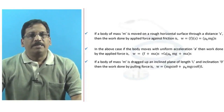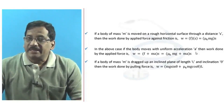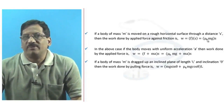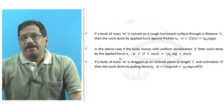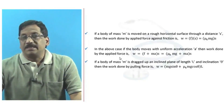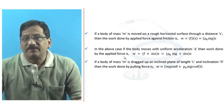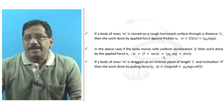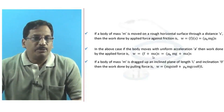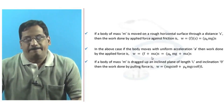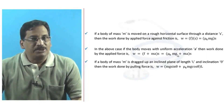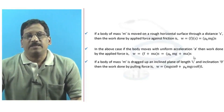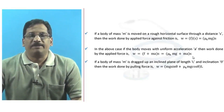If the body is dragged with acceleration a on the rough horizontal surface, the applied force must overcome both friction and provide acceleration. So the total applied force is μk·mg + ma, and the work done over displacement s is W = (μk·mg + ma) × s.